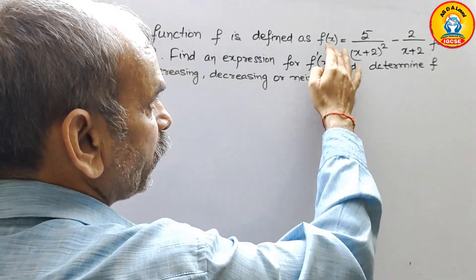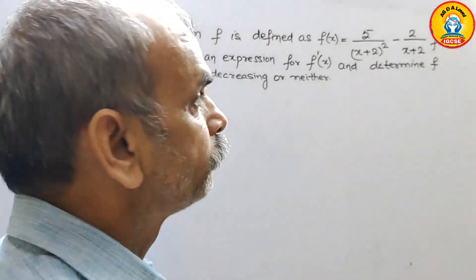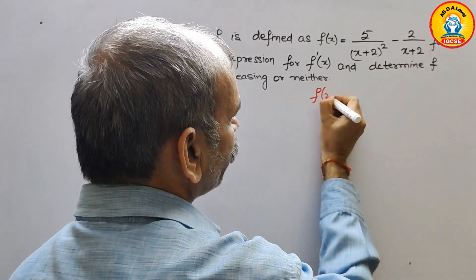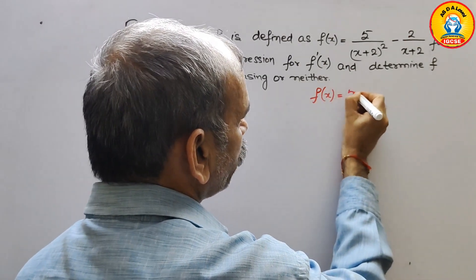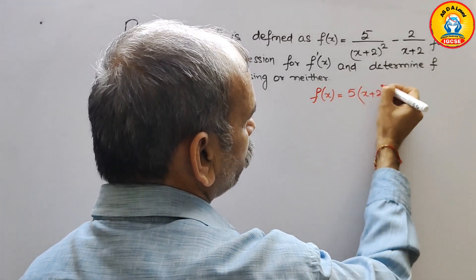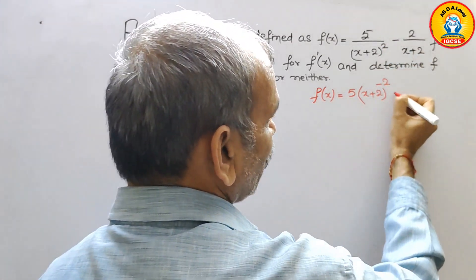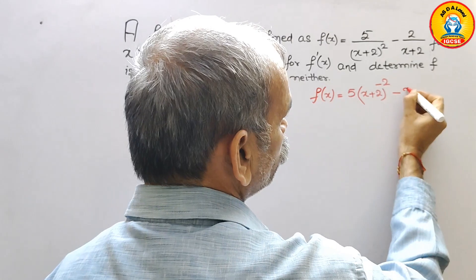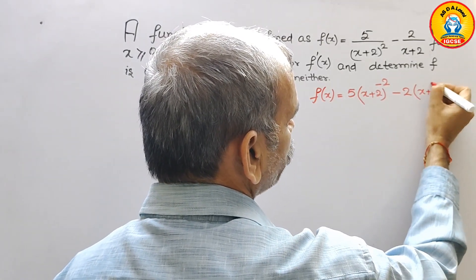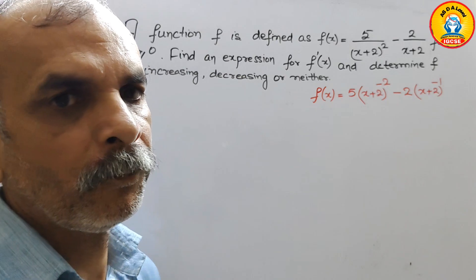First we will rewrite our function. We can say that f(x) is equal to 5 times (x+2) to the power minus 2, minus 2 times (x+2) to the power minus 1. So this is our function.